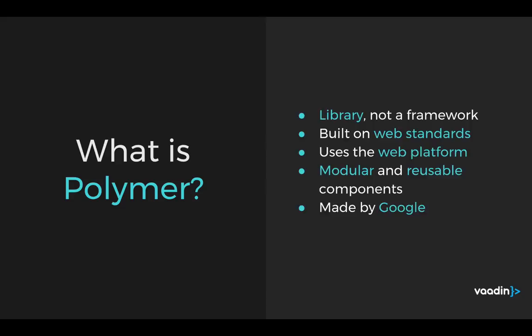Let's talk about Polymer. Polymer is a library written by Google. It's not a framework where you have to learn an entirely new set of constructs and concepts. Instead, it's built on the web platform to leverage what's already in your browser natively. It's built on the web component specification so you could use it with any other web component libraries. The power of Polymer and web components in general is being able to write modular and reusable components, so you could write one component and use it in multiple places and compose them together to create larger web apps.